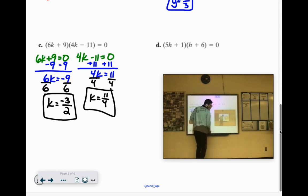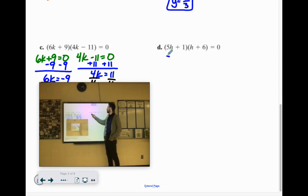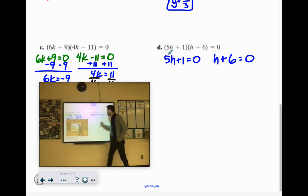1 more of this. Same procedure, though. We got this. Set up your two equations. 5h plus 1 equals 0. And h plus 6 equals 0. Let's go ahead and solve the h plus 6. That one's easy. We'll just subtract the 6. h equals negative 6.